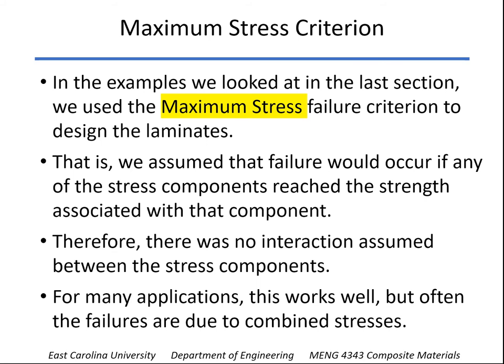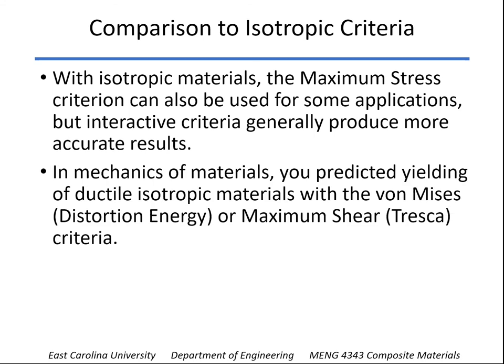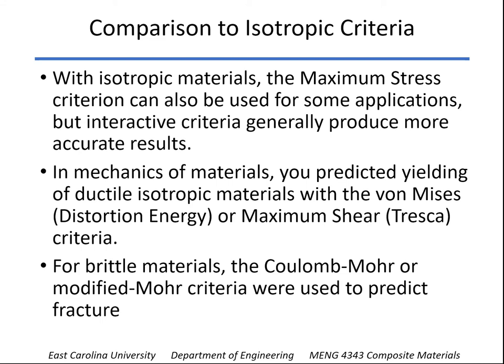Sometimes that works okay, but a lot of failures are going to be due to combined stresses. If you think about what we did in mechanics of materials with isotropic materials, you can use the maximum stress criterion sometimes, but there are interactive criteria that fit the data better. For ductile materials, von Mises and max shear criteria were used to predict yielding. For brittle materials, the Coulomb-Mohr or modified-Mohr criteria gave a pretty good fit with data. In all those cases, you looked at a combined interaction of the stresses.